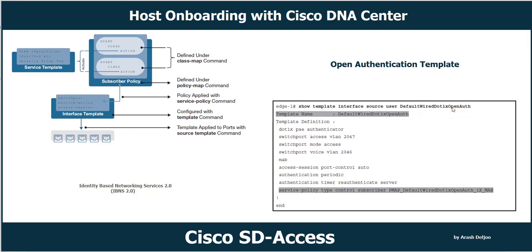The 'source' command applies the configuration from the specified template. The template definition includes: dot1x pae authenticator, switchport access VLAN, switchport mode access, switchport voice VLAN, MAB, access-session authentication, periodic authentication timer, and a service policy type. This template is applied to the switch port facing the user. The service template includes VLAN, IPv4/IPv6 ACLs if available, and scalable group tags.